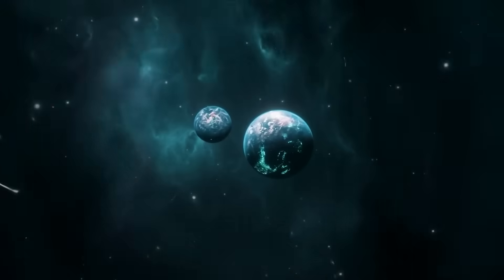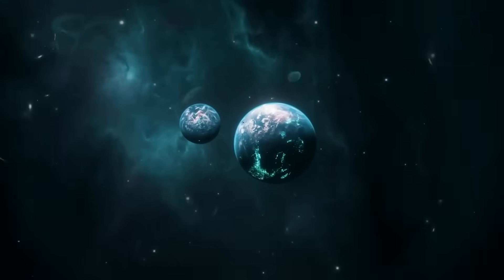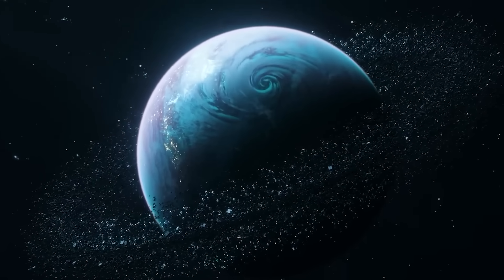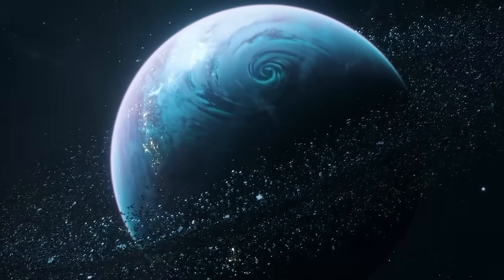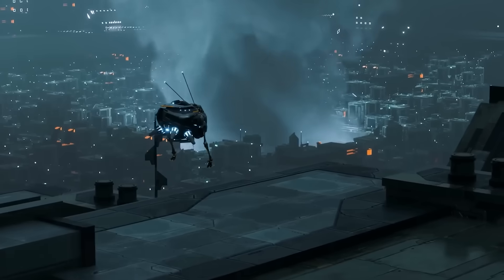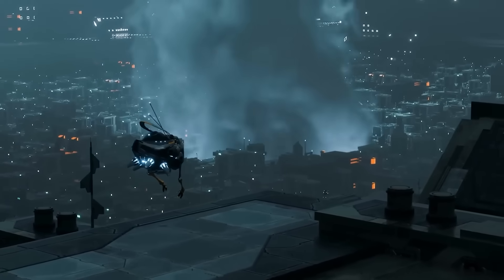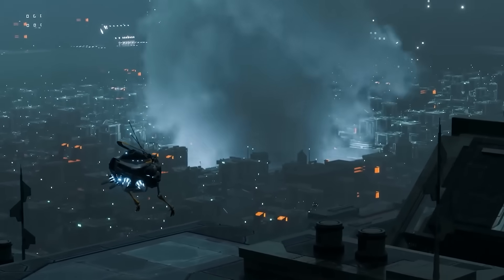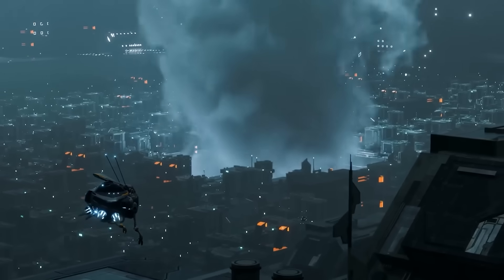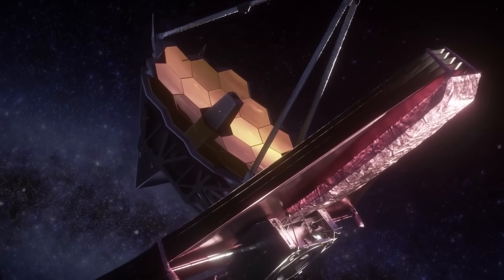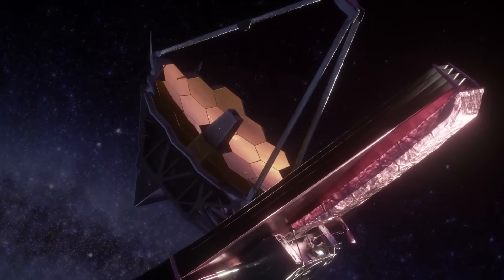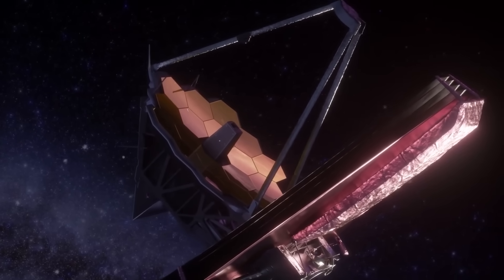As the James Webb Space Telescope continued to unveil the mysteries of the cosmos, it raised new questions about the nature of life in the universe. Were the tantalizing hints of artificial lights on distant planets evidence of intelligent civilizations? Could these enigmatic signals point to the existence of extraterrestrial life? These questions had perplexed scientists for centuries, and with the advanced observational capabilities of the James Webb Space Telescope, they were closer than ever to finding answers.